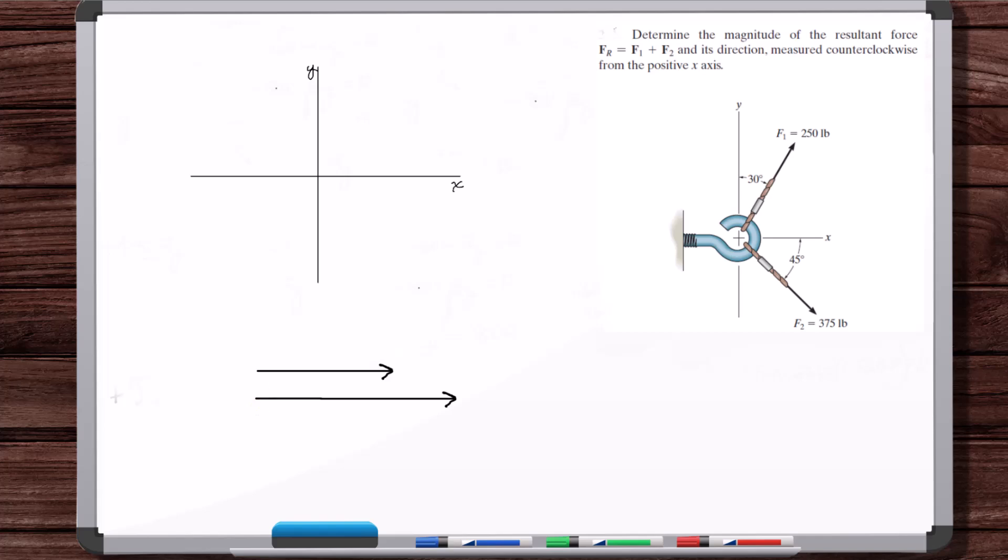Now, what we want to do is let's get this vector at 30 degrees, about like that. And then let's get this vector at this minus 45 degrees, like that. This is 250. This is 375.